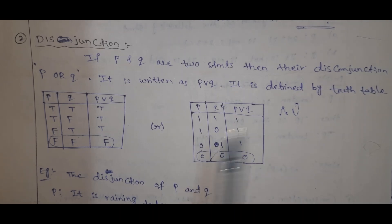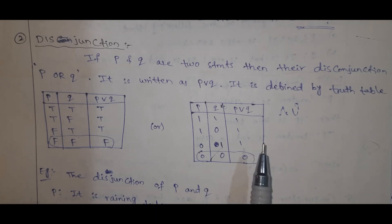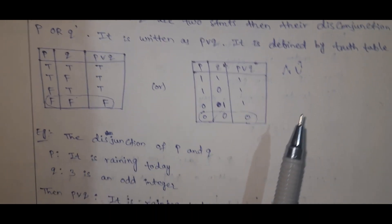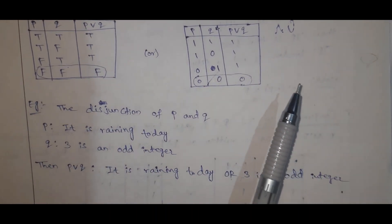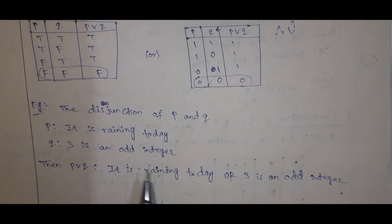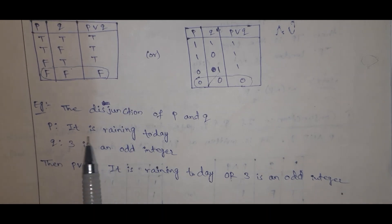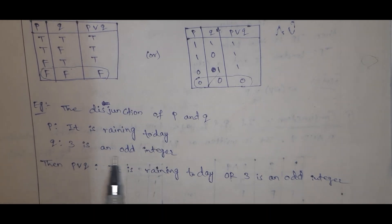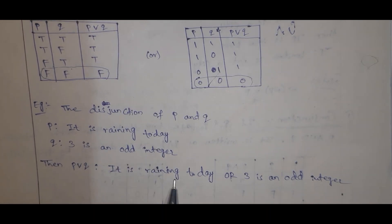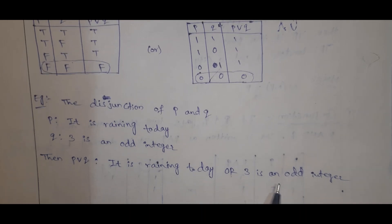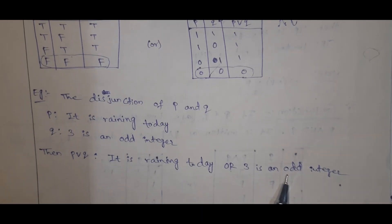These are binary operations. Example: 'It is raining today' OR 'three is an odd integer.' Using the disjunction, we combine these two statements with the OR symbol.